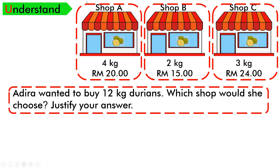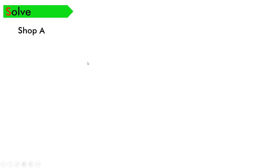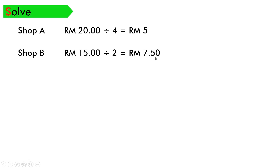Step 2 — plan. Kita akan gunakan kaedah unitary, which means we find the price of 1 kilogram of durian for each shop using division. Step 3 — solve. Shop A: RM20 ÷ 4 kg = RM5 per kg. Shop B: RM15 ÷ 2 = RM7.50 per kg. Shop C: RM24 ÷ 3 = RM8 per kg.